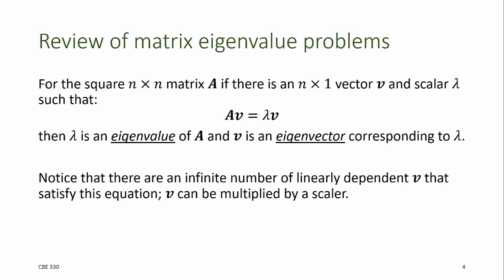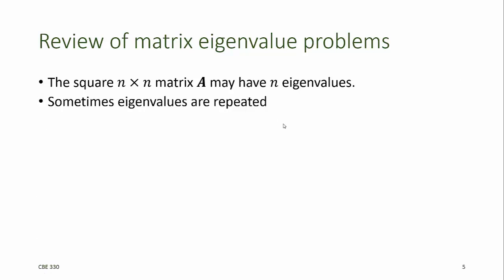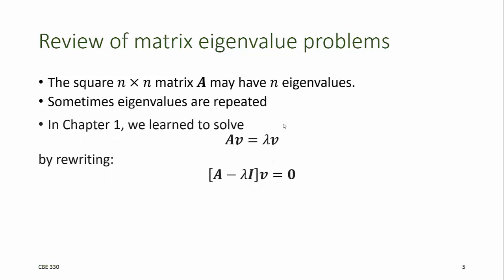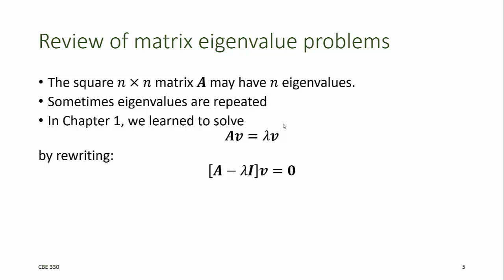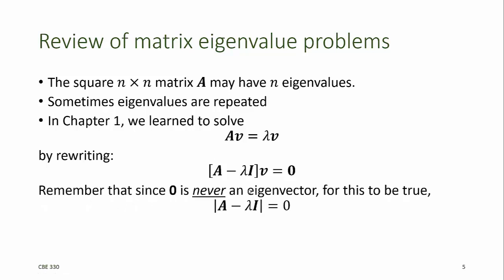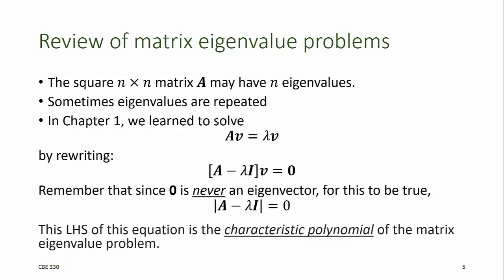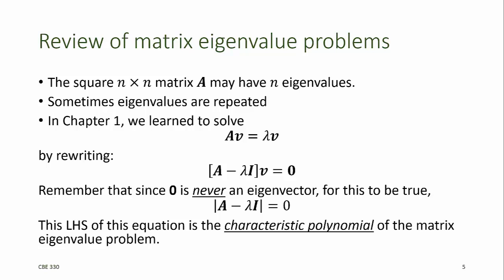Notice that there are an infinite number of linearly dependent v that satisfy this equation, because multiplying this equation by any scalar value, we can multiply v by a corresponding scalar and obtain the same result. The trivial result, 0, is not considered an eigenvector. The n by n square matrix A may have n eigenvalues; however, sometimes eigenvalues are repeated. In Chapter 1, we learned to solve the matrix eigenvalue problem — finding the eigenvectors and eigenvalues — by rewriting the problem such that the determinant of A minus lambda I must be equal to 0. The left-hand side of this equation is the characteristic polynomial of the matrix eigenvalue problem, and we use this characteristic polynomial to find the eigenvalues.